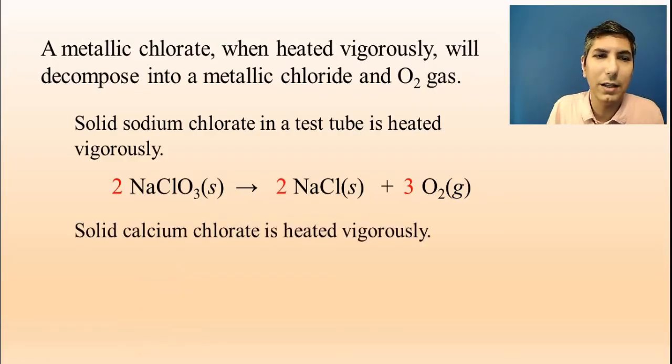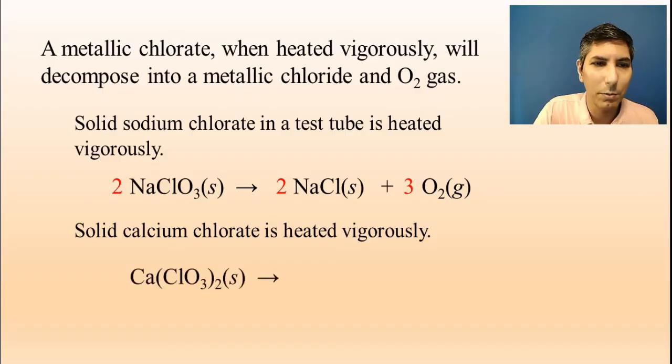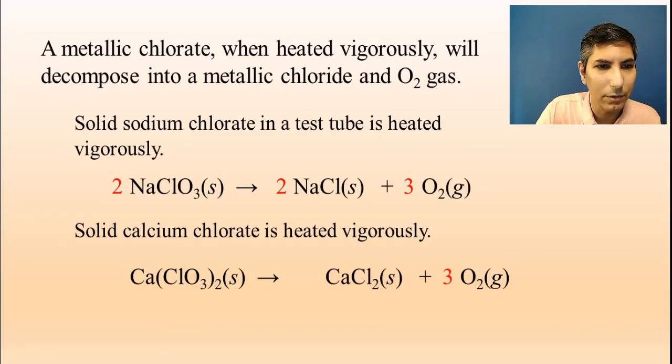How about if solid calcium chlorate is heated vigorously? Once again, it is the same type of reaction here. We write the formula for calcium chlorate, Ca(ClO3)2. And we're going to make, this time, it's going to be calcium chloride and oxygen gas. And don't forget to balance the equation there as well. So we have our balanced equation for these.